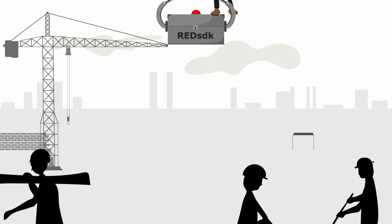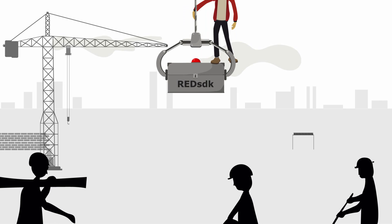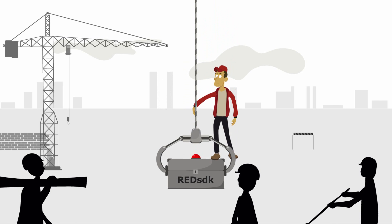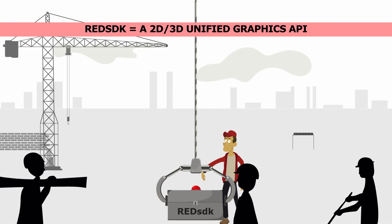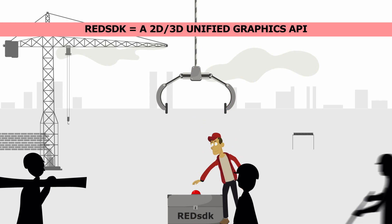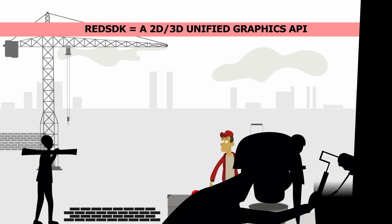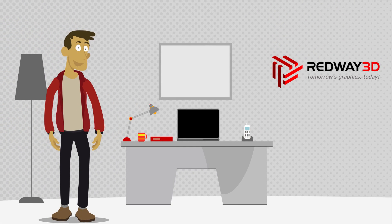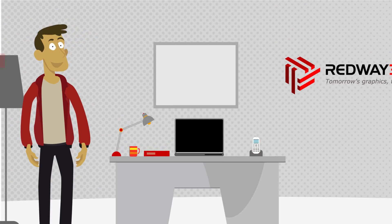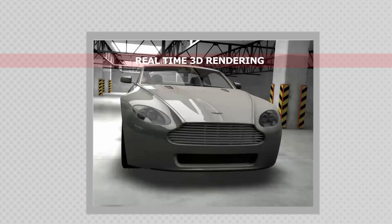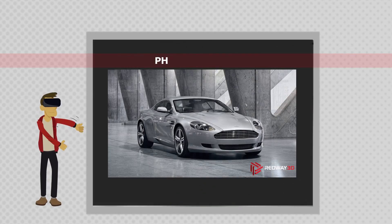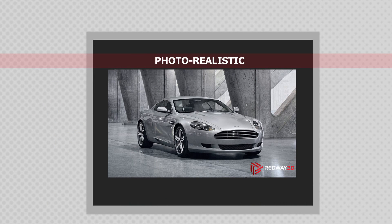To meet these new needs, Redway 3D presents Red SDK, a 2D and 3D unified graphics API to simplify the work of developers and meet all of your visualization needs. Red SDK covers all the graphics features for real-time 2D, real-time 3D, virtual reality, and photorealistic rendering through a single integrated API.